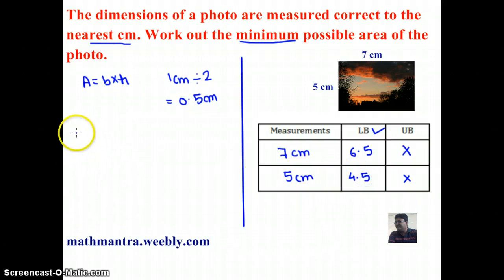So the minimum area will be base times height using the lower bounds. So 6.5 times 4.5, and working that out we get 29.25 centimeters squared.